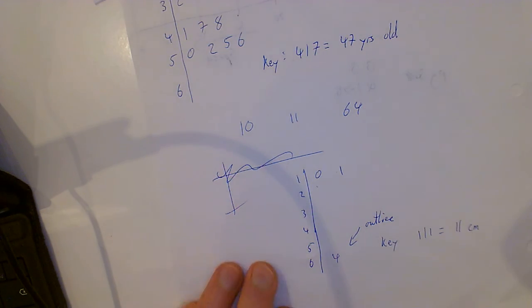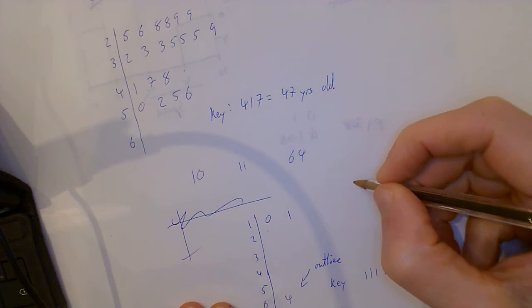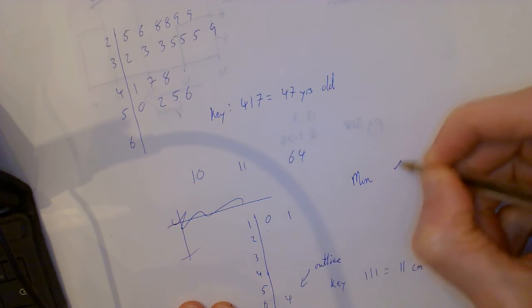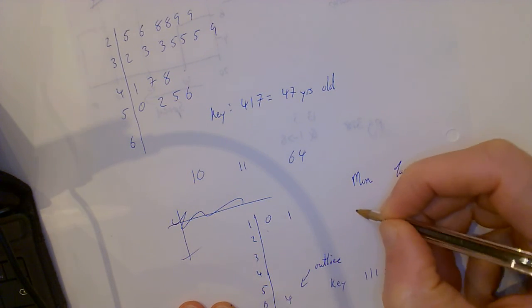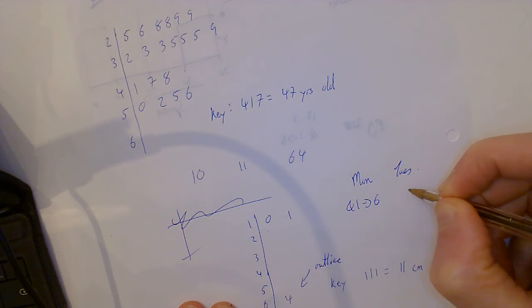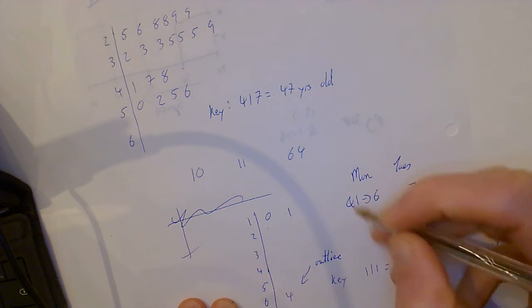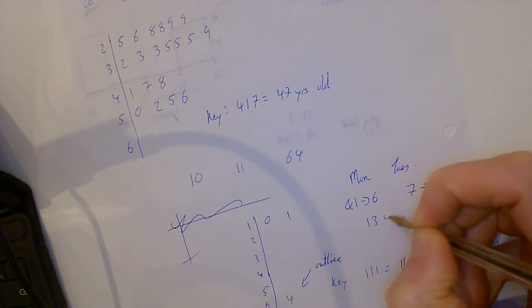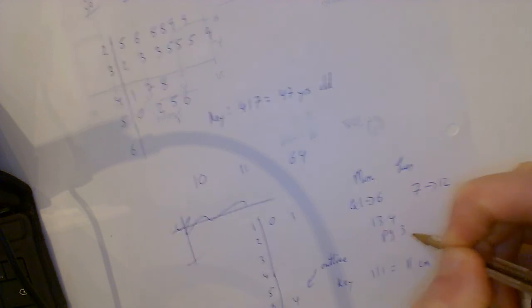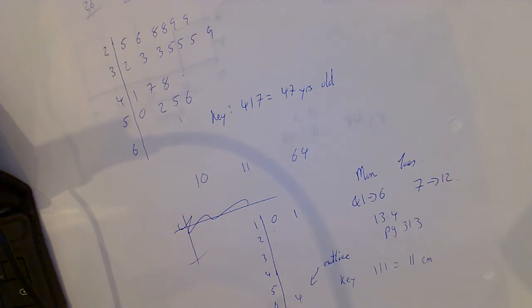So your homework is, this is for Monday and Tuesday. Monday you're going to do questions 1 to 6, and then you're going to do 7 to 12 on Tuesday. That's 13.4, page 313.